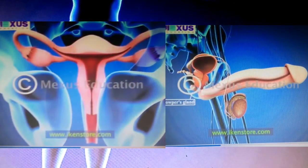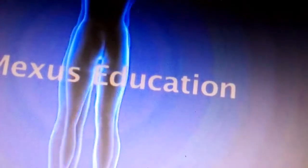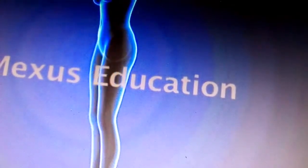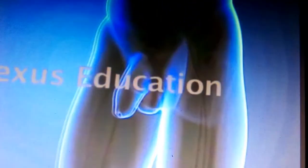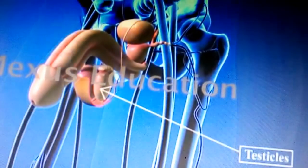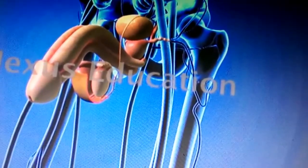The reproductive system in males and females is responsible for the production of hormones as well as the process of reproduction. The most important organs of the male reproductive system are the testicles or testes, which are enclosed in a sac known as the scrotum.